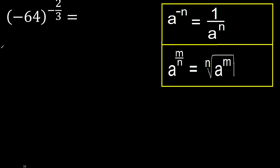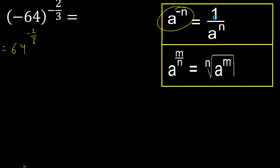Negative exponent. Here is 2. 2 is even, therefore eliminate the minus. Negative, therefore like this: 1 over...